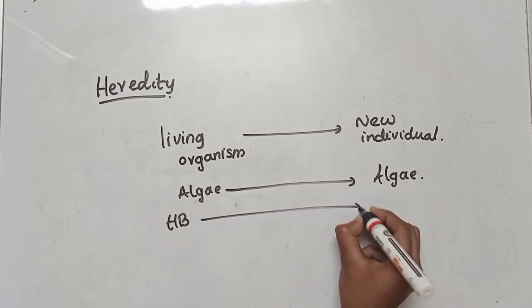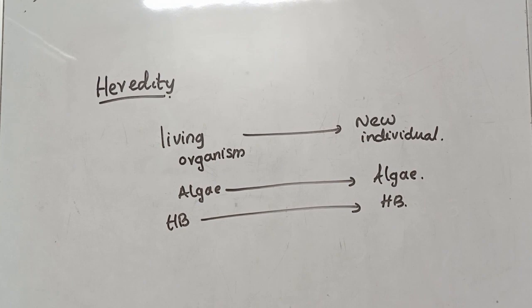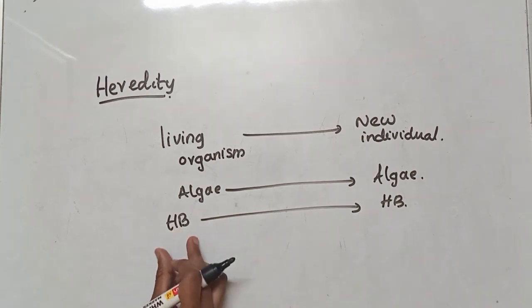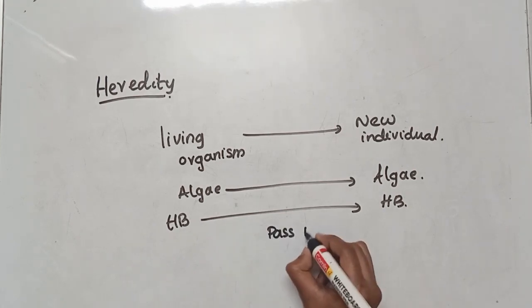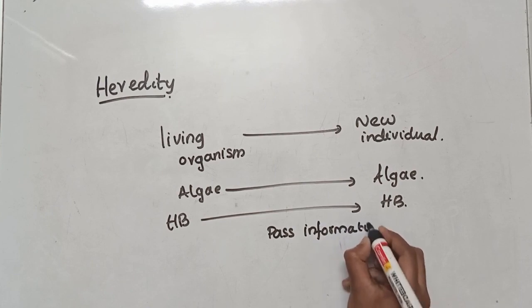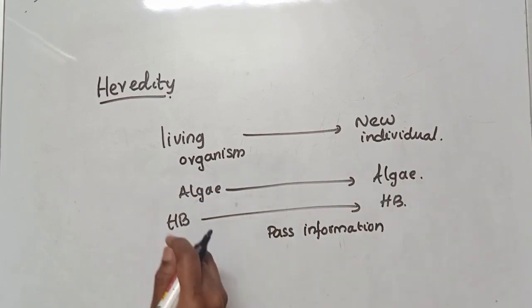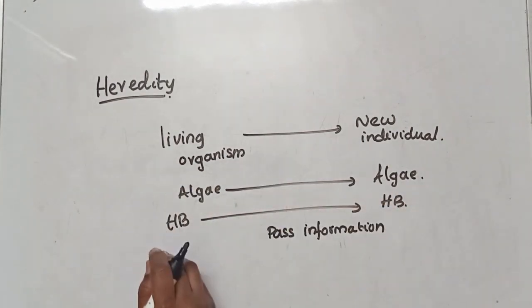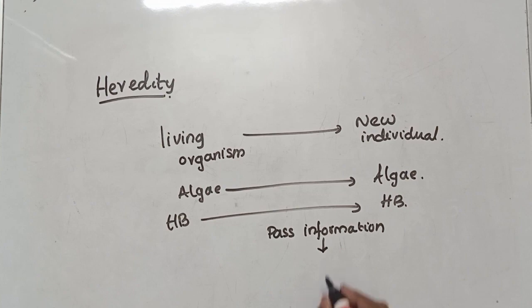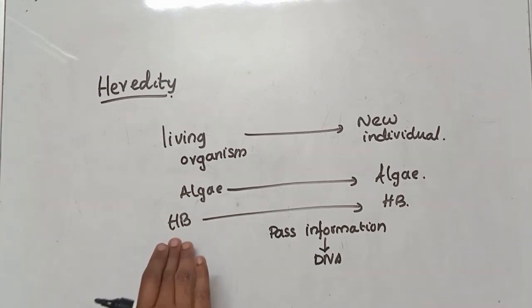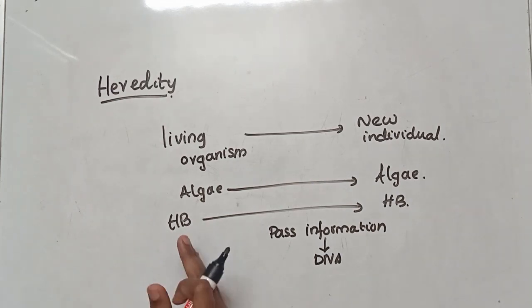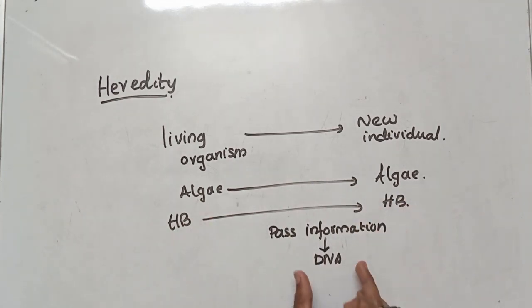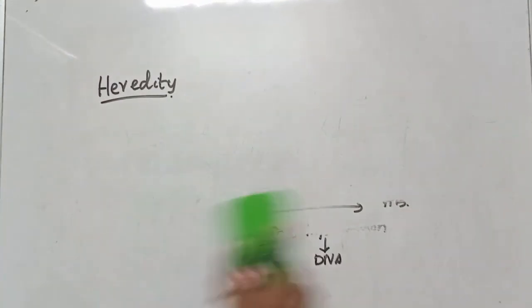For example, take a human being. They pass information from one generation to another. When our parents have the information, we pass it on. So, DNA is what is passed on.